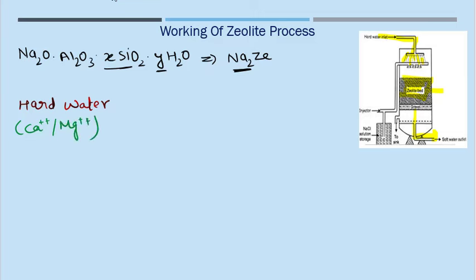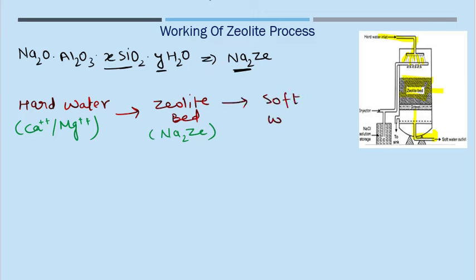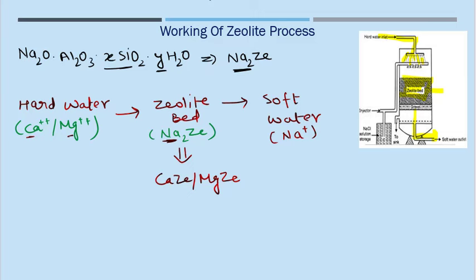Hard water does not give lather formation with soap. So when the water passes through a zeolite bed, which we represent as Na2Ze, the water comes out in the form of soft water — soft water means there is no hardness. The sodium ion is exchanged with calcium or magnesium ion, so the sodium zeolite is converted into calcium or magnesium zeolite, and the water will no longer be softened. We call this exhausted.